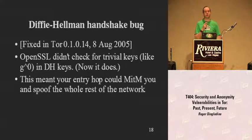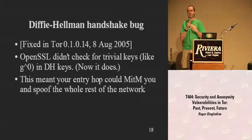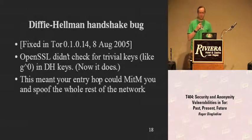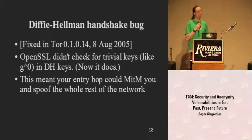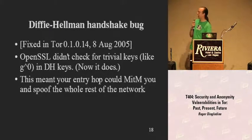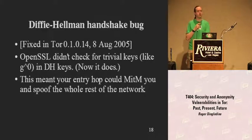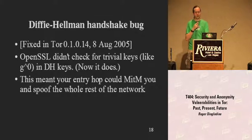OpenSSL has since fixed it — now when doing Diffie-Hellman operations it can check. That was an exciting week where we were trying to figure out exactly what sort of attackers would be able to attack users. You'll notice a trend here: this one was fixed August 8th. You'll notice a lot of these bugs being fixed in the first or second week of August — we'll get back to that.